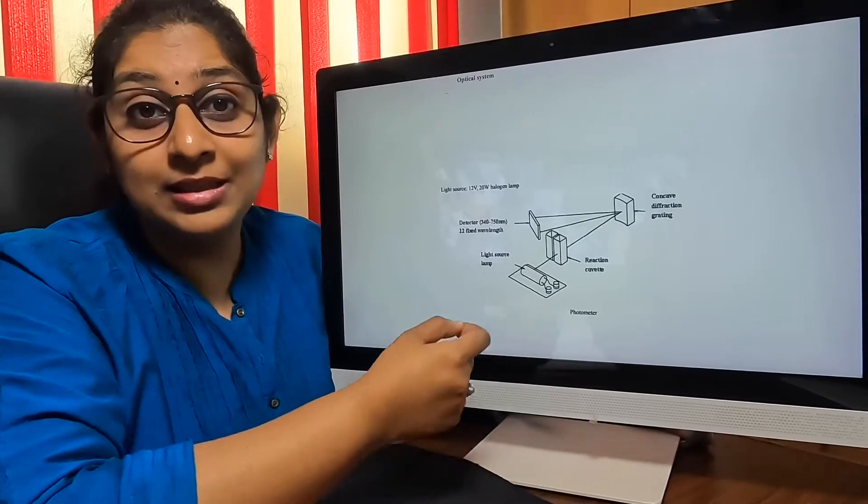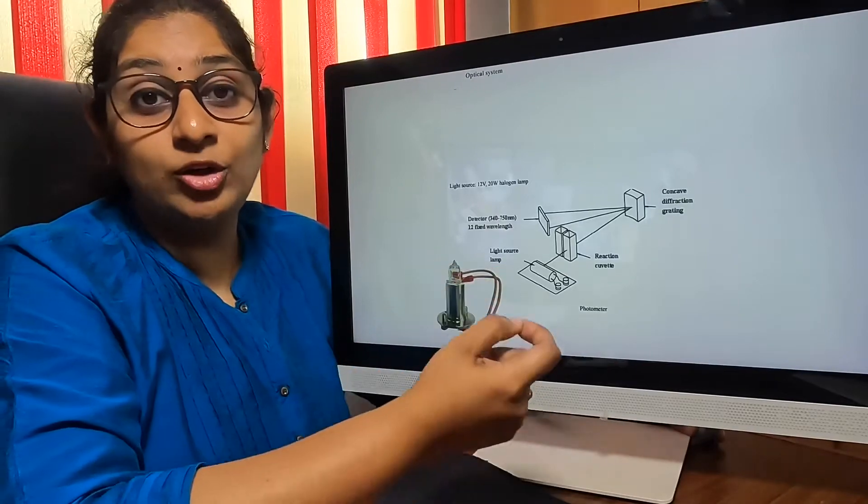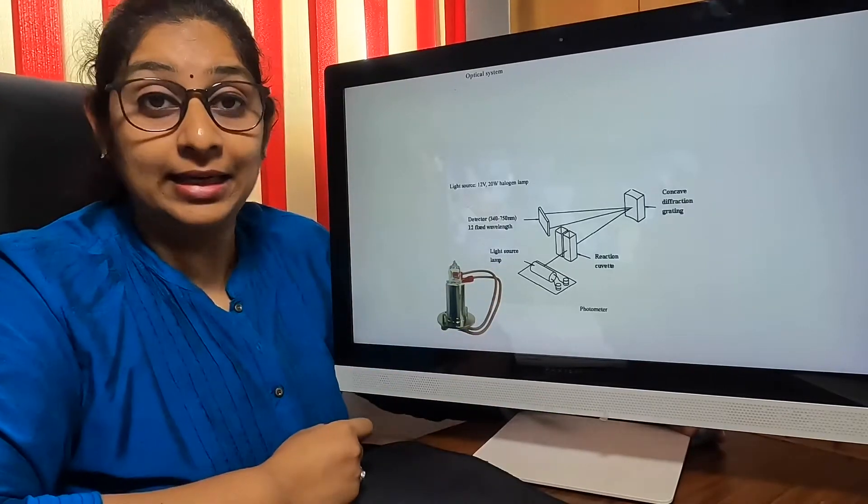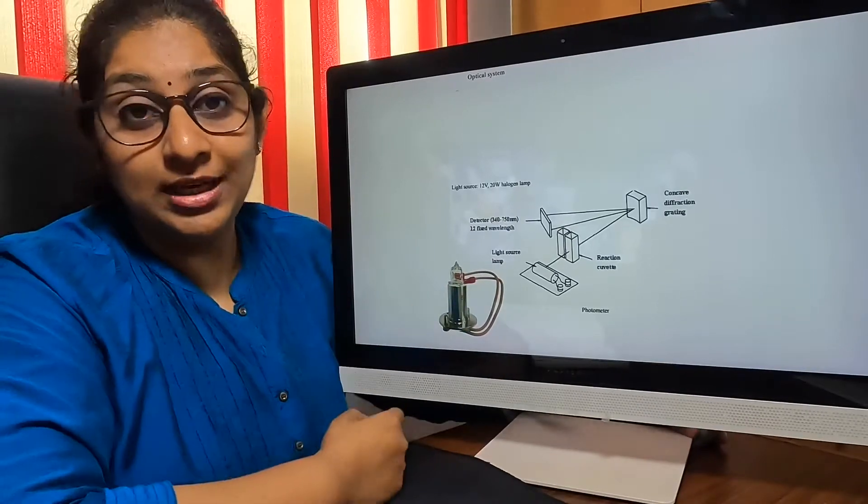We will have a halogen lamp which is going to emit monochromatic light. This is a 20 watt, 12 volt halogen lamp.